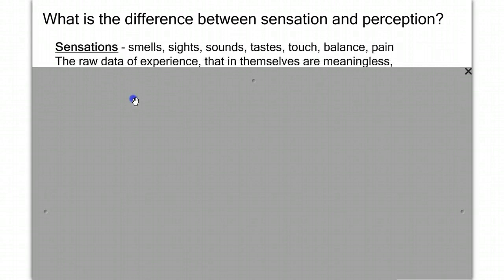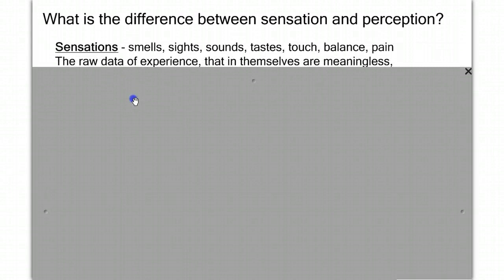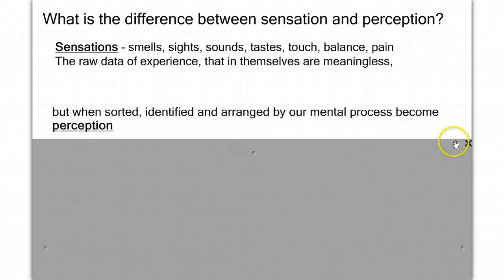So what is the difference between sensation and perception? Sensation are smells, sights, sounds, tastes, touch, balance, pain. They are the raw data of experience that in and themselves are meaningless. But when we sort, identify, and arrange by mental process, they become perception.